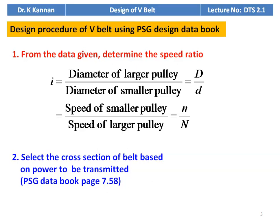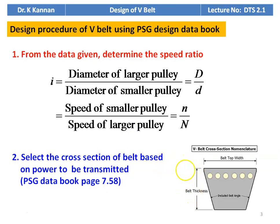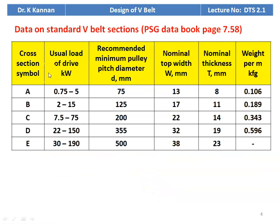Select the cross section of the belt based on the power to be transmitted. Refer to page number 7.58 of the PSG data book. The V-belt has a trapezoidal cross section; the vertical height is the belt thickness and the top face width is the belt top width, along with the included angle. On page 7.58, data on standard V-belt sections gives five cross sections: A, B, C, D, and E. The table provides the usual load of the drive in kilowatt, recommended minimum pulley diameter in millimeters, nominal top width W, nominal thickness T in millimeters, and weight per meter in kilogram-force. Based on the diameter or the power to be transmitted, you can select the particular cross section of the belt.